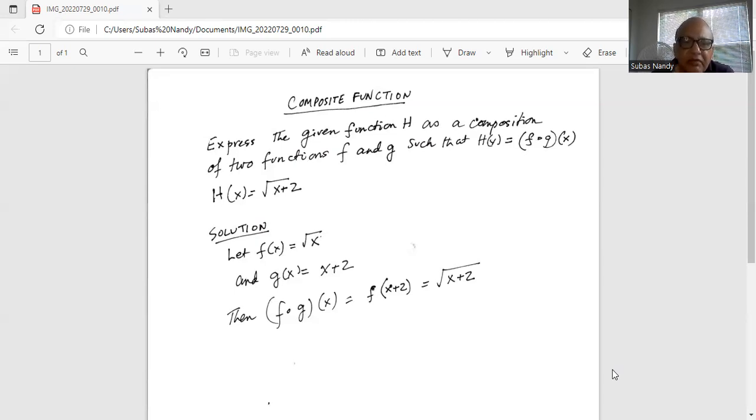Why? Because F composite G(x) is F of G(x), and G(x) is x plus 2. So it will be F of x plus 2, which is square root of x plus 2. I will stop here today.